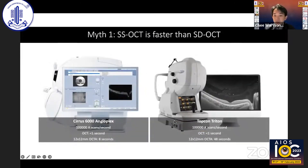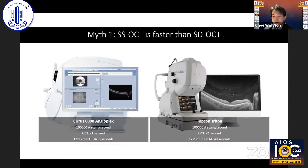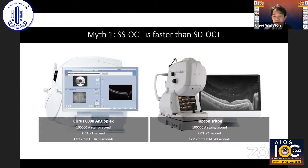Myth number one: swept source is faster than spectral domain. Although spectral domain started out slower at 25,000 scans per second, it has since caught up, and both can now perform 100,000 scans per second. The patient experience is great for both — less than a second to obtain a macular scan. For OCT angiography, the experience was actually better with spectral domain, taking about 10 seconds compared to almost 50 seconds with the swept source instrument.